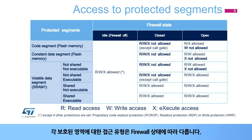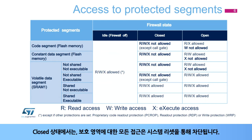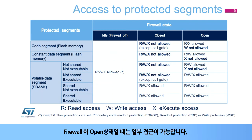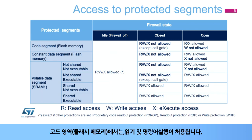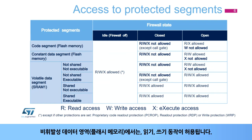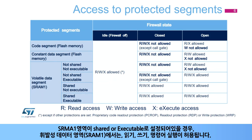The type of access to the protected segments depends on the firewall state. When it is closed, any access to the protected area generates a system reset. When the firewall is open, some access is possible: in the code segment (flash memory), read operations and instruction fetches are allowed; in the non-volatile data segment (flash memory), read and write operations are allowed; in the volatile data segment (SRAM1), read, write, and execute operations are allowed if the SRAM1 segment is declared as shared or executable.